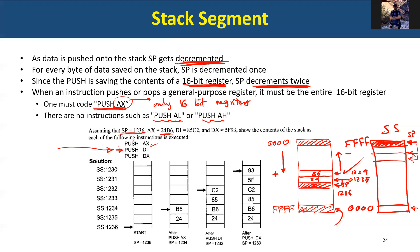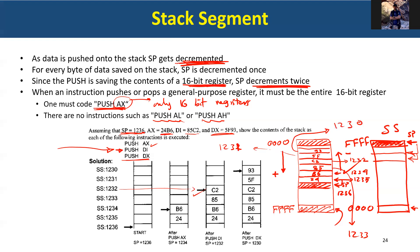Next, we push DI, which contains 85C2. The most significant byte 85 goes to the higher address (1233), and the least significant byte C2 goes to 1232. Finally, we push DX. The most significant byte 5F is stored at 1231, and the least significant byte 93 is stored at 1230. That's how the PUSH operation works.